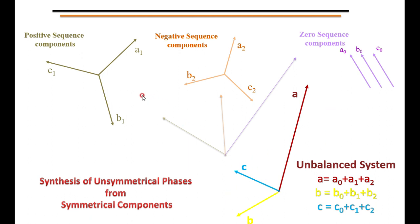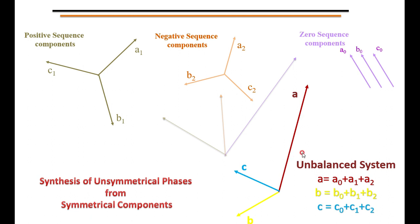An unbalanced phasor can be resolved into a balanced phasor of three sets: positive sequence, negative sequence, and zero sequence. Since we have three unbalanced phasors, we get three sets of balanced phasors. The question arises: if we add these positive, negative, and zero sequence components back together, do we get the original unbalanced phasor? We can verify this in the next slide.